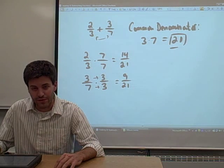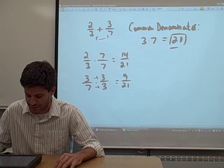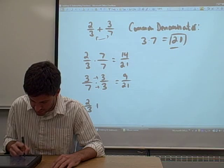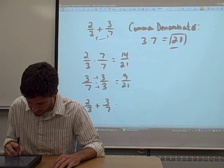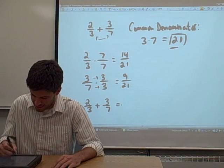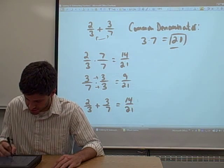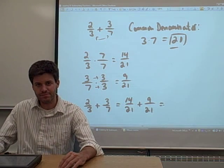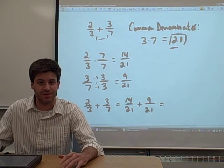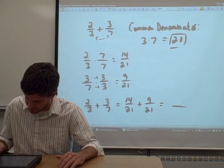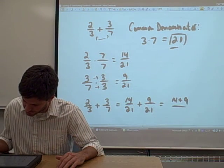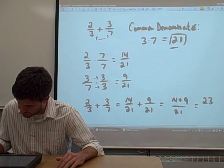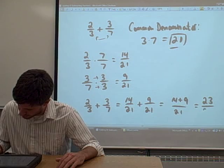So we've rewritten both 2 thirds and 3 sevenths into fractions with the same denominator. We can take this problem, 2 thirds plus 3 sevenths, and rewrite it as 14 twenty-firsts plus 9 twenty-firsts. Now these two fractions have the same denominator, so we can add them really easily. Just take the 14 plus 9, put that in the numerator, leave the 21 in the denominator, and we get 23, where 14 plus 9 is 23, over 21.